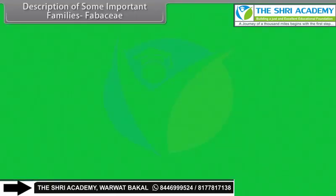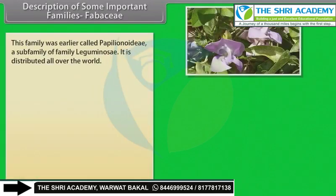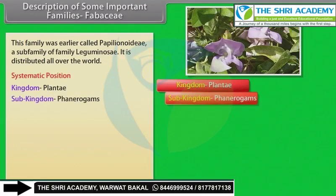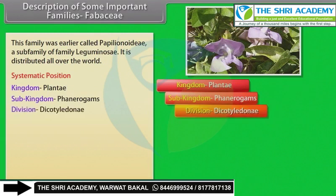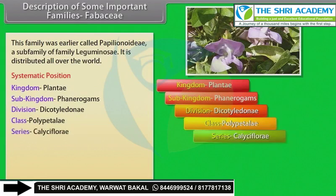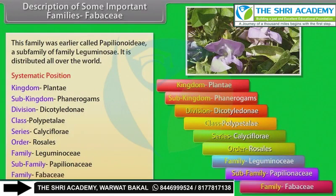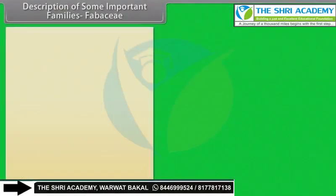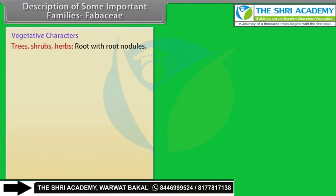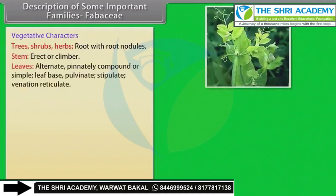Description of some important families — Fabaceae: This family was earlier called Papilionatae, a subfamily of family Leguminosae. It is distributed all over the world. Systematic position: Kingdom Plantae, Sub-kingdom Phanerogams, Division Dicotyledoni, Class Polypetali, Series Calyciflorae, Order Rosales, Family Leguminosae, Subfamily Papilionatae, Family Fabaceae.